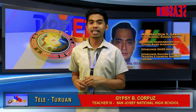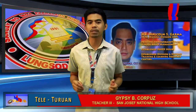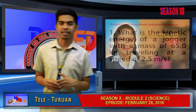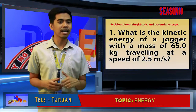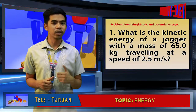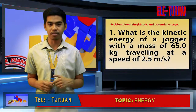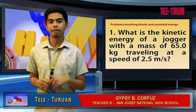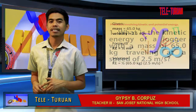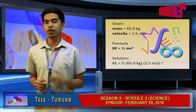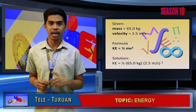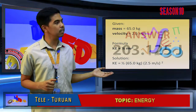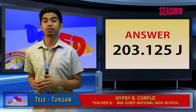And now, let us try to solve some problems involving kinetic and potential energy. Problem number one: What is the kinetic energy of a jogger with a mass of 65 kilograms traveling at a speed of 2.5 meter per second? Using the formula Ke is equals to one-half mv squared, the answer will be 203.125 joules.